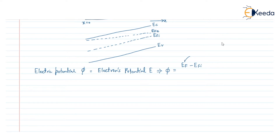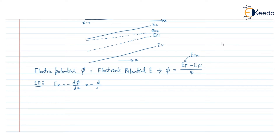We denoted this EF by EFN in the diagram, but here I am using only EF, so it is divided by q. For the one-dimensional situation, the electric field EX can be written as minus dφ/dx. If we substitute the value of φ, it becomes (1/q) · (d/dx)(EFI).